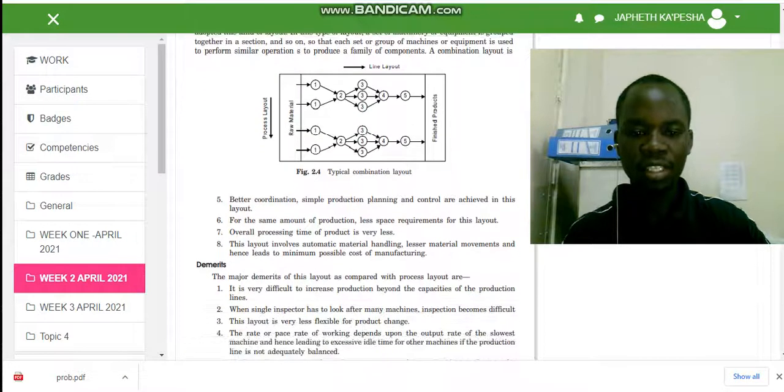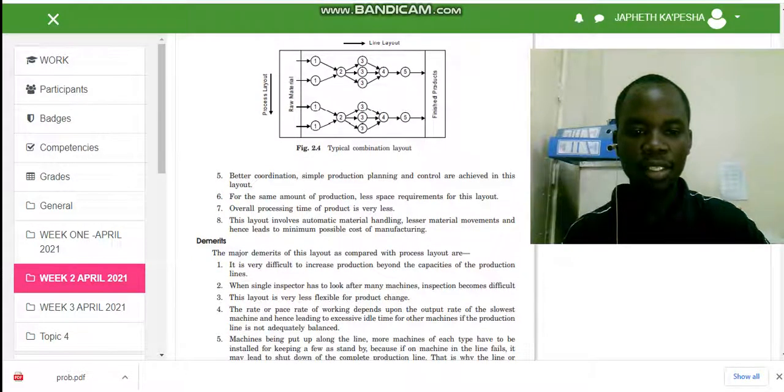What are the disadvantages of this layout? One, it's very difficult to increase production beyond the capacity of the production line. When a single inspector has to look after many machines, inspection becomes difficult. This layout is very inflexible for product change. The rate or pace of working depends upon the output rate of the slowest machine, hence leading to excessive idle time for other machines.